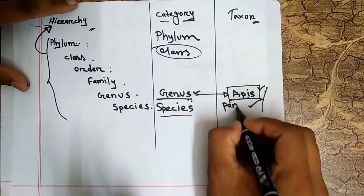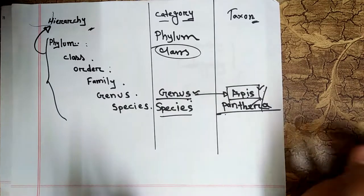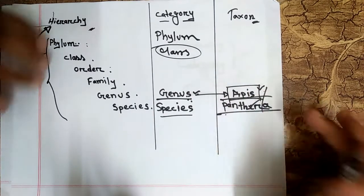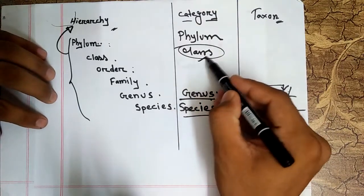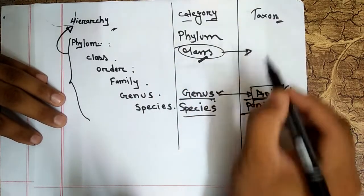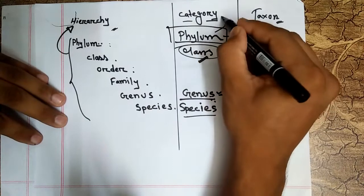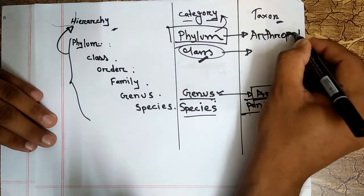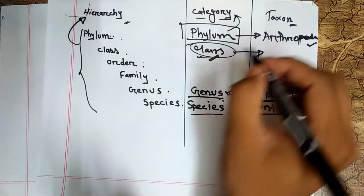We can take another example — Panthera. Panthera is a name of a genus, so the name of the genus is called a taxon. In short, category is an individual piece of hierarchy classification, and the examples of category are known as taxon. For instance, phylum is a category, and any example of phylum — such as Arthropoda — is a taxon. Similarly, any example of the class, such as Insecta, is a taxon.